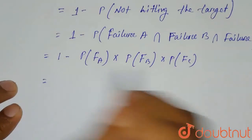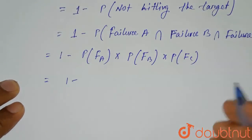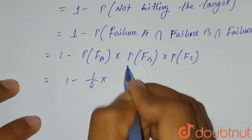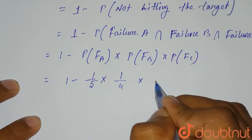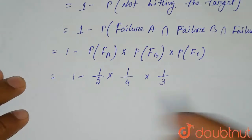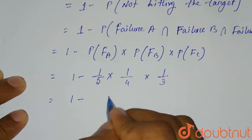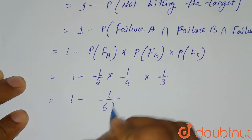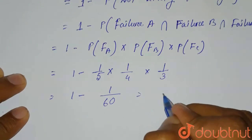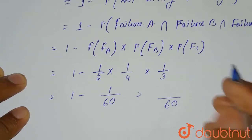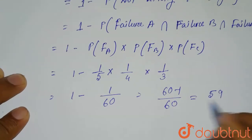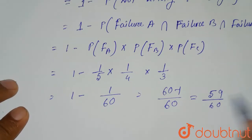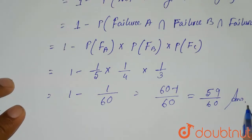So substituting the values: it will be 1 minus probability of failure of A (1 by 5) multiplied by failure of B (1 by 4) multiplied by failure of C (1 by 3), which equals 1 minus 1 by 60. Taking the LCM, the denominator is 60 and the numerator is 60 minus 1, which equals 59 by 60. So this is the probability of hitting the target — the required solution. Thank you.